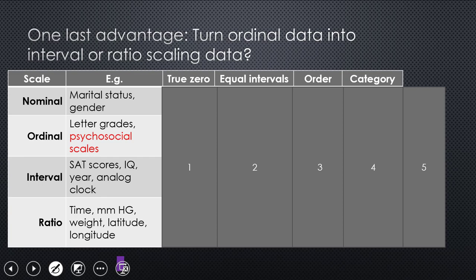And I'll develop one other advantage of the strategy is maybe you can turn ordinal data into interval or ratio scaling data with the magic of meta-analysis. So here we have the four types of scales conventionally considered: nominal, ordinal, interval, ratios. So like whether someone's married or not, divorced, what gender they have. This is nominal data.